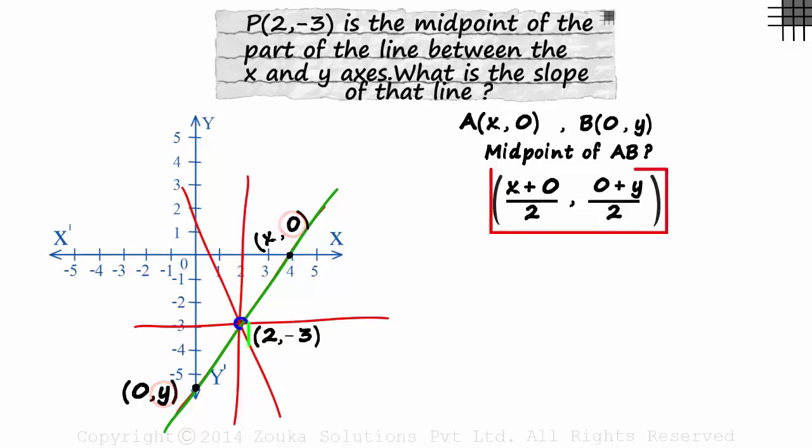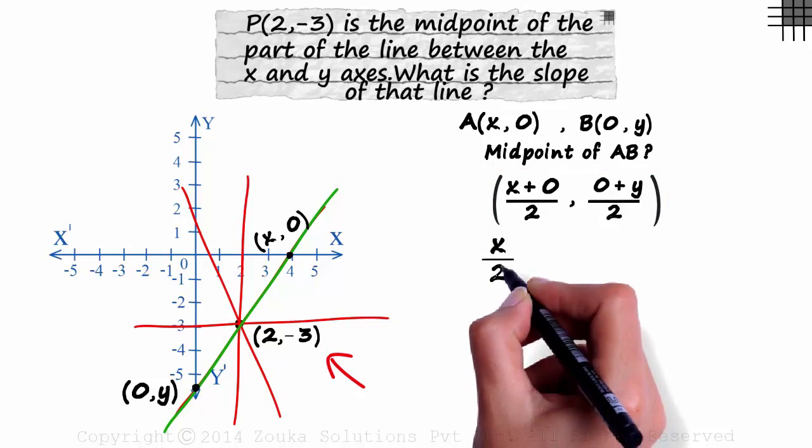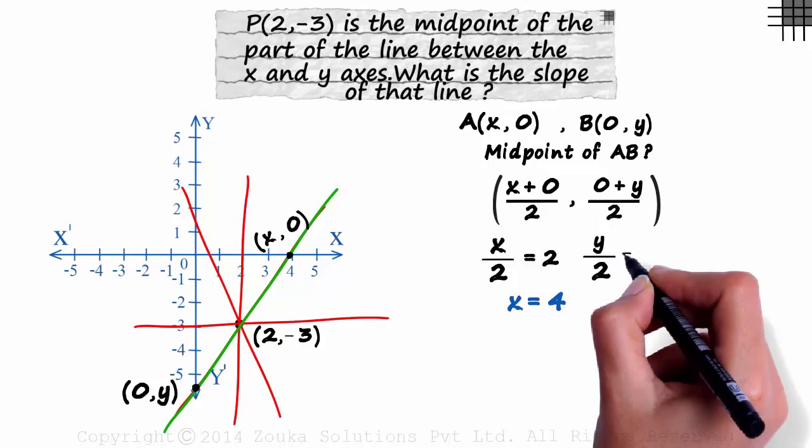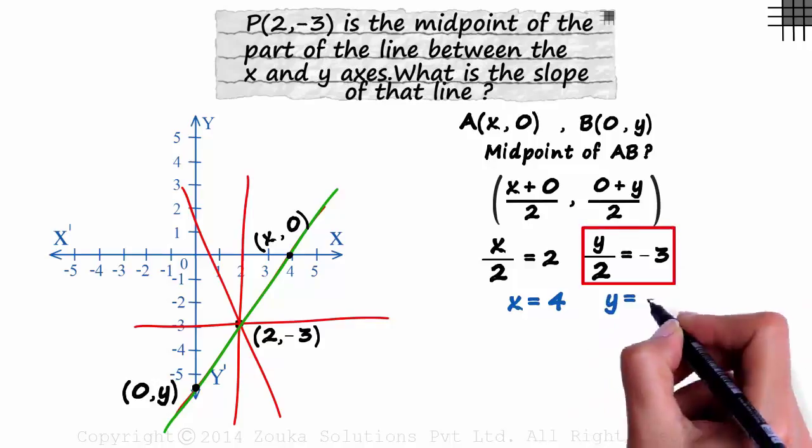And this is 2 comma minus 3. This is the midpoint that is given to us. So x over 2 will equal 2. We get x as 4. And y over 2 is minus 3, so y is minus 6.